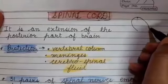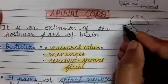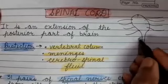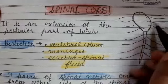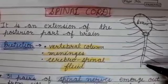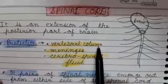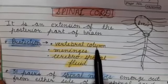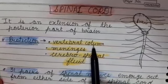Now our topic is the Spinal Cord. The Spinal Cord is the extension of the posterior part of the brain. Cranial nerves arise from the brain and spinal nerves arise from the Spinal Cord. The Spinal Cord's protection includes the Vertebral Column, which is made up of small bones called vertebrae — 33 vertebrae joined to form a single vertebral column in which the Spinal Cord is placed.